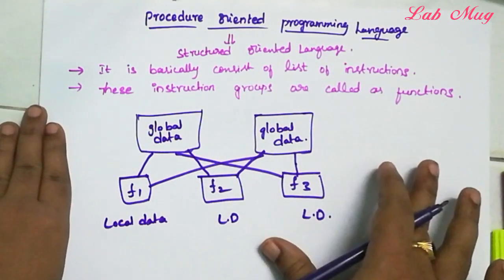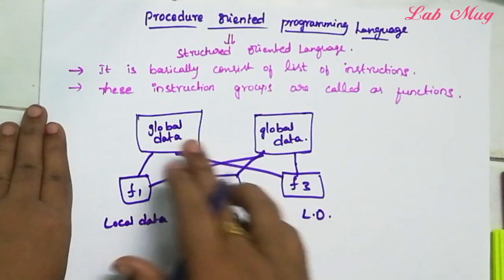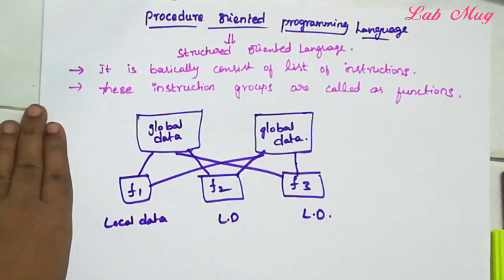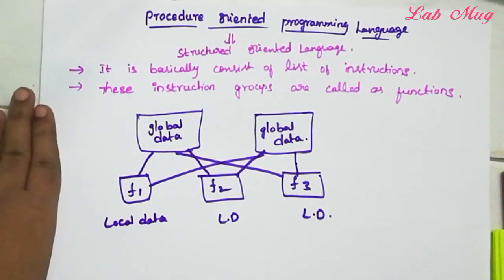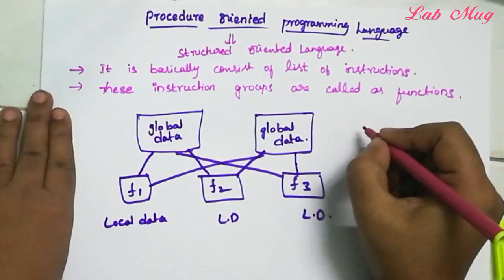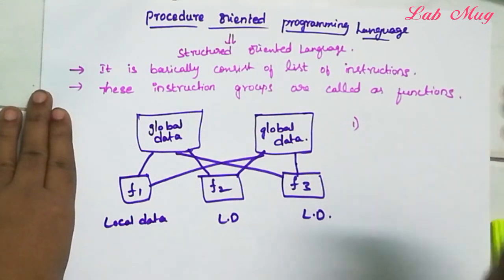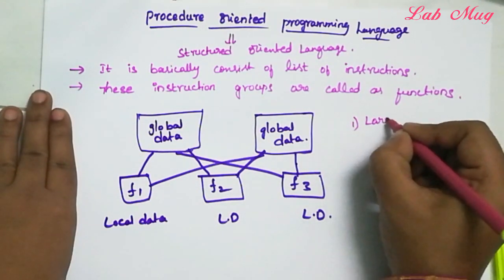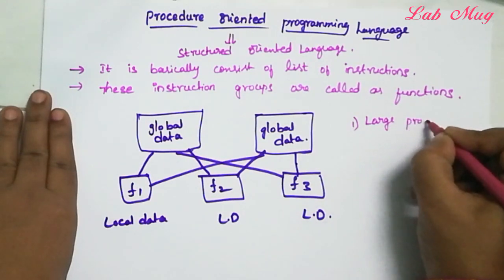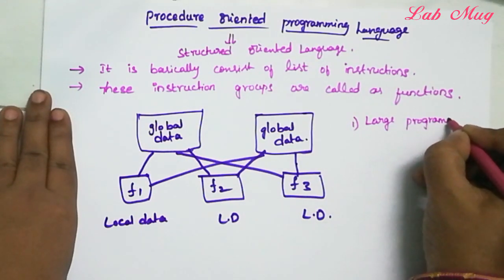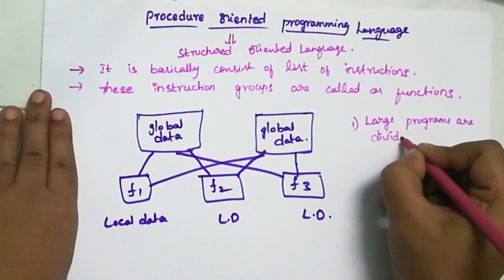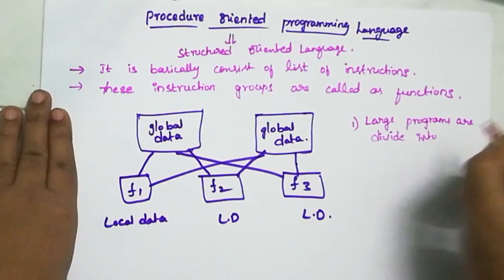So in procedure oriented programming language, every instruction is nothing but some function. Every function accesses some global data. What are the characteristics of procedure oriented language? The first point is: every program is divided into functions. Large programs are divided into functions. This is one characteristic.